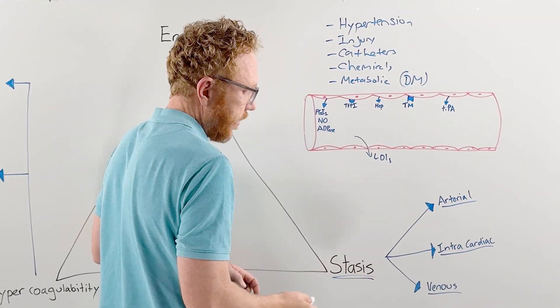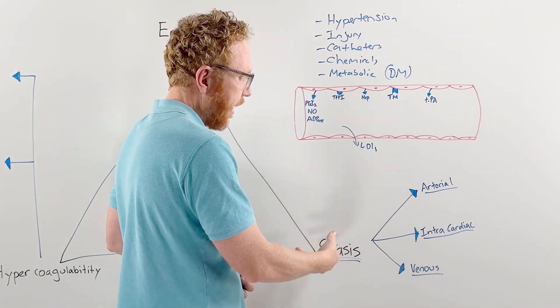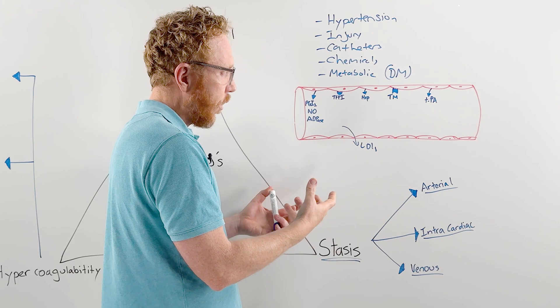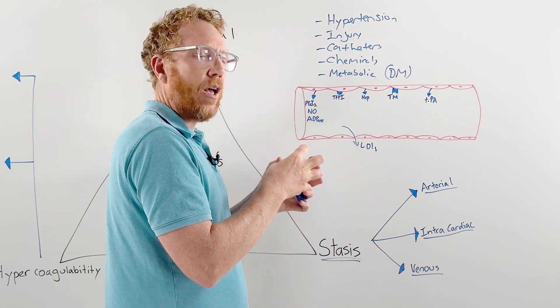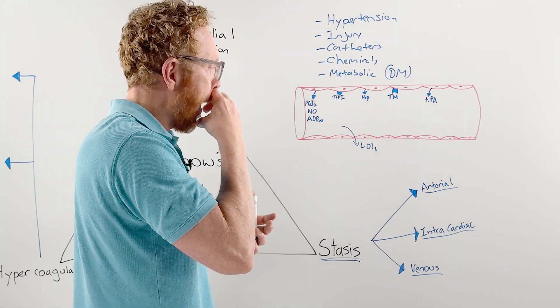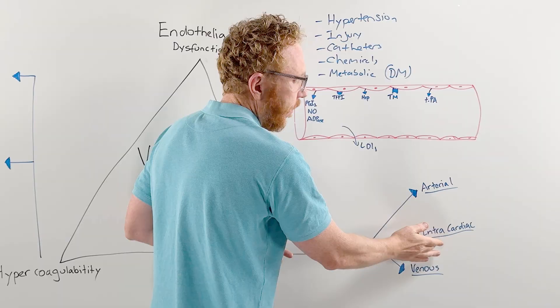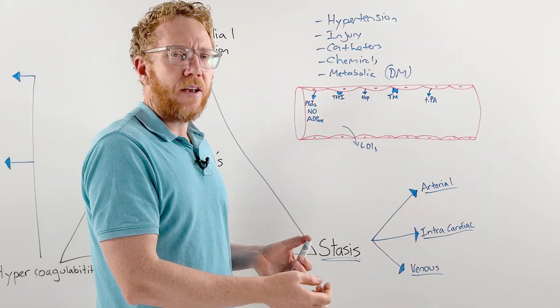Moving to stasis, this is slowing down flow, making the flow stagnated, increasing the likelihood of the blood coalescing and forming clots. This can happen differently in different parts of the cardiovascular system.